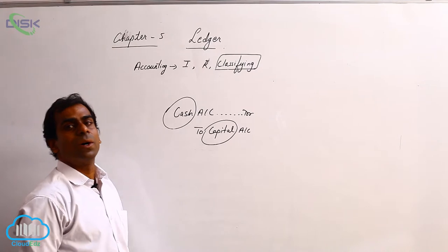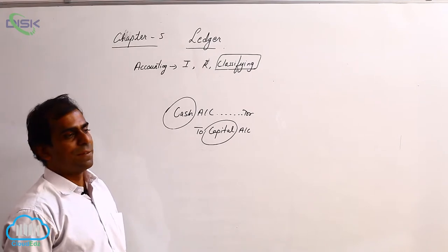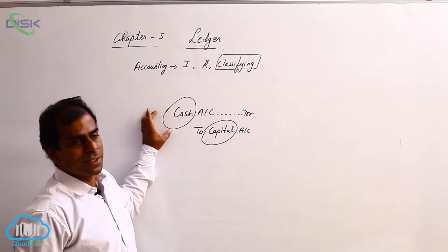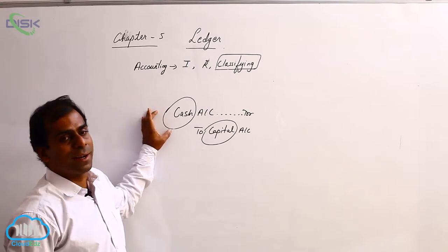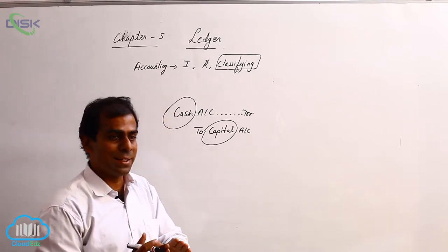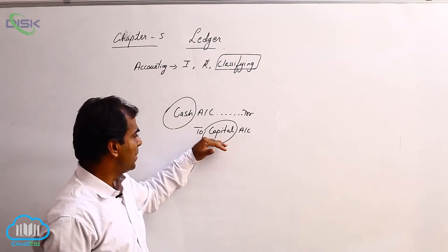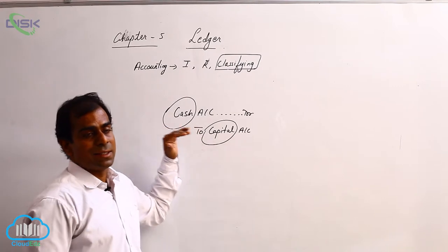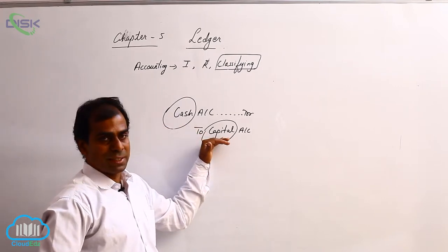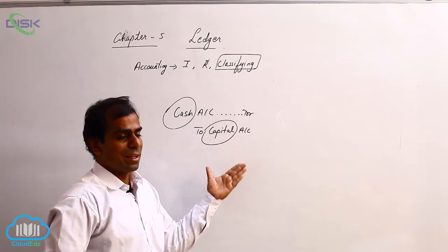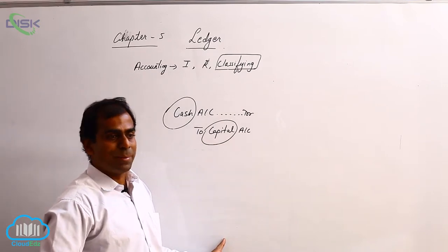So in Ledger what we will be doing is, we will be collecting wherever the cash is debited or credited at one place under the heading cash. Similarly we will be collecting the information relating to capital. So in some transactions capital might be credited, some cases it might be debited.